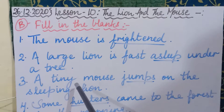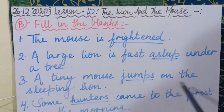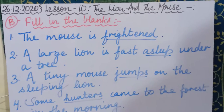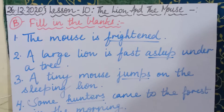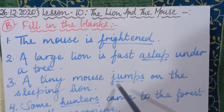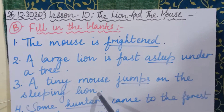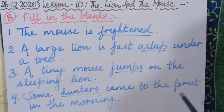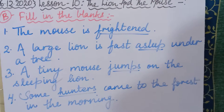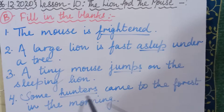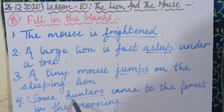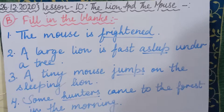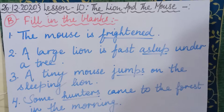Now the third sentence: 'A tiny mouse ___ on the sleeping lion.' When the lion was sleeping under the tree, the tiny mouse jumped on the sleeping lion. So we write: A tiny mouse jumps on the sleeping lion. Now the fourth sentence: 'Some ___ came to the forest in the morning.' The spelling of hunters is H-U-N-T-E-R-S — hunters. So your sentence will be: Some hunters came to the forest in the morning. There are only four sentences in Fill in the Blanks.